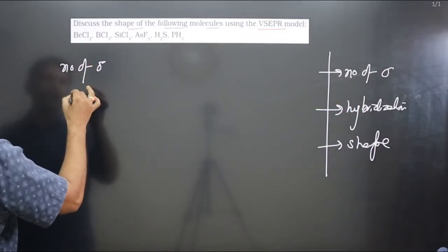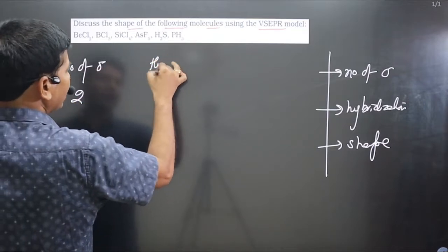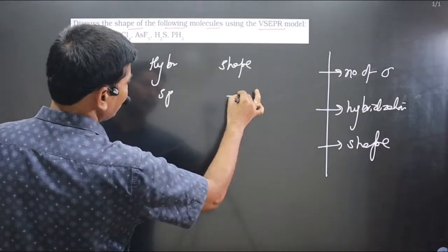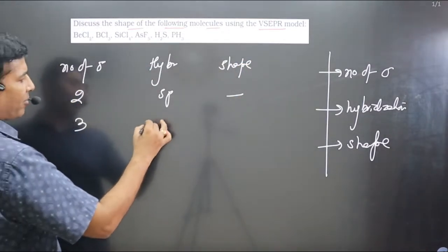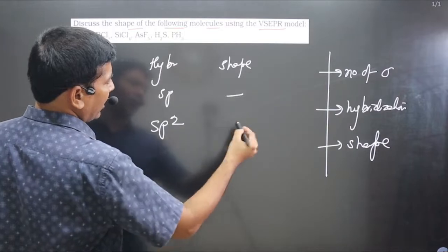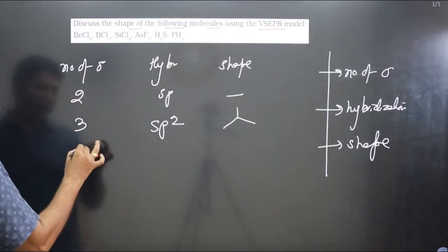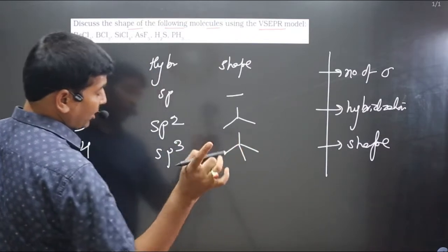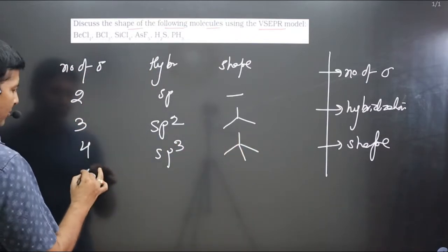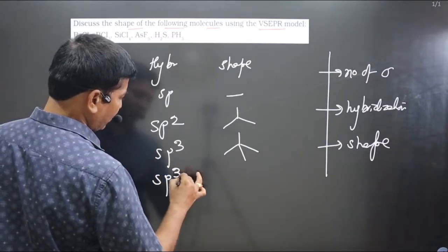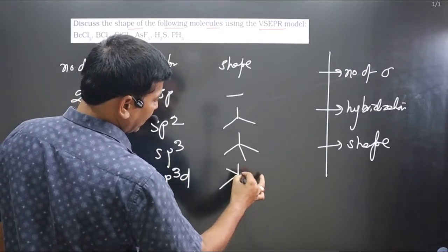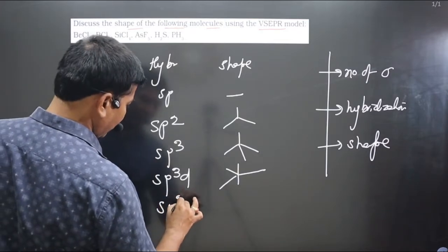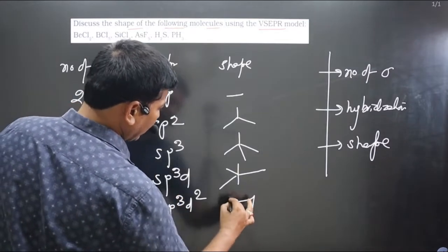If the number of sigma bonds is 2, hybridization will be sp and shape will be linear. If 3, hybridization is sp2 and shape is trigonal planar. If 4, hybridization is sp3 and shape is tetrahedral. If 5, hybridization is sp3d and shape is trigonal bipyramidal. If 6, hybridization is sp3d2 and shape is octahedral.